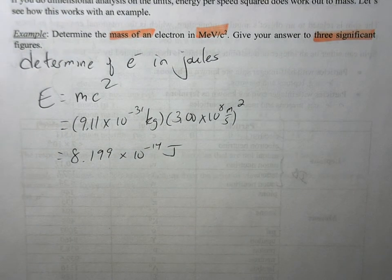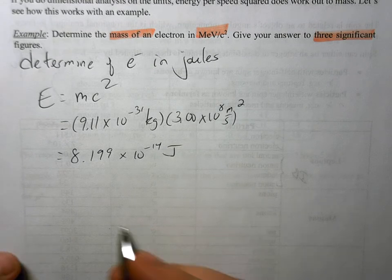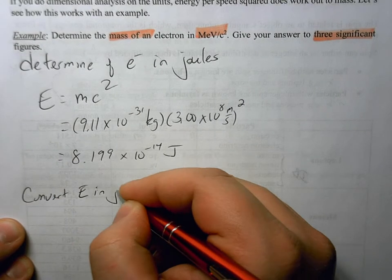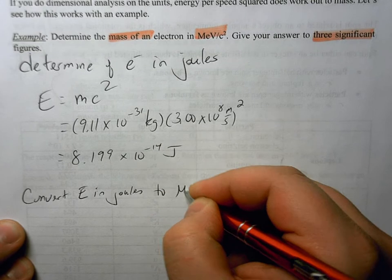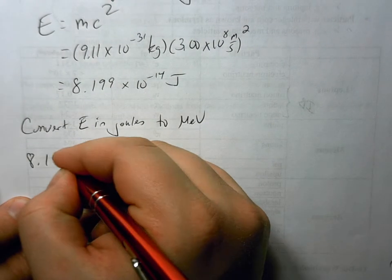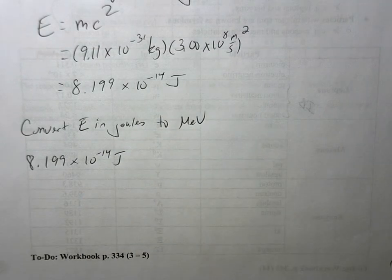What we want to do now, since we're asking to have this in MeV per C squared, we're going to convert joules to Mega Electron Volts. So we're going to convert that to MeV. Now some people, they do their conversions in one step. I'm big on doing that too. But again, showing you some extra steps never hurts anyone.